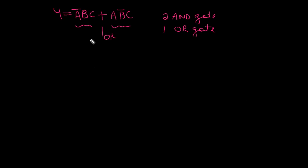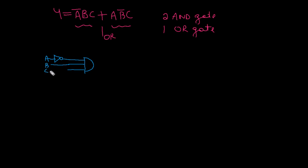Let me take an AND gate — this AND gate requires three inputs, so I will take a 3-input AND gate. The first input is A-bar, so I will connect A and pass it through an inverter, then connect it to this input. The second input is B directly, and the third input is C. For the second AND gate, also 3 inputs: first one is A, second one is B passed through an inverter connected to the AND gate, and third one is C.